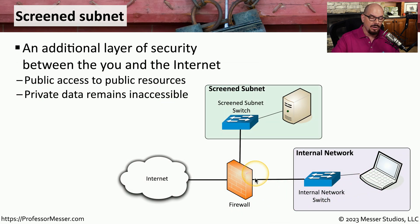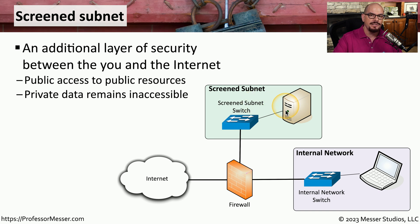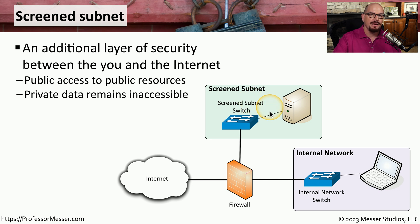Most organizations place their firewall at the ingress-egress point of the network — the point that separates the internet from the internal network. In this diagram, a firewall sits between the rest of the networks and the internet at large. This firewall is connected to two different networks on the inside: the internal network, where all confidential data might be, and a screened subnet. A screened subnet holds services and devices that need to be accessed by individuals on the internet. By directing internet traffic to the screened subnet, it prevents anyone from the internet from accessing the internal network.